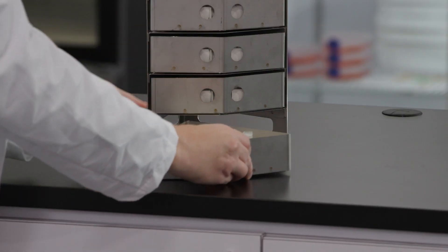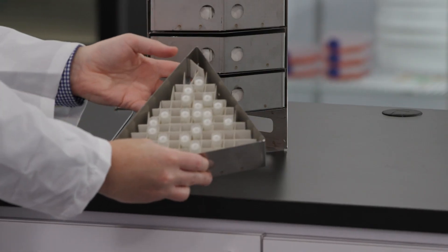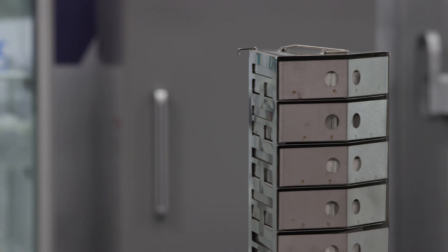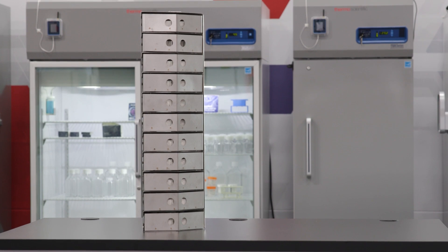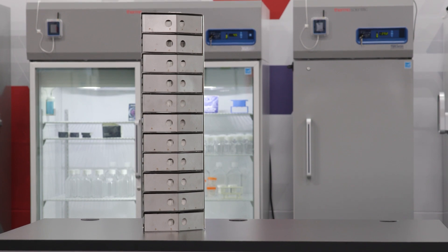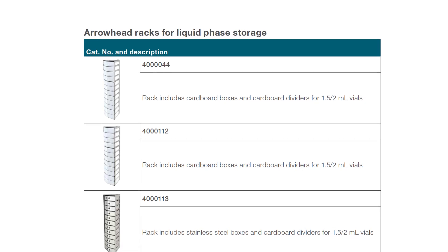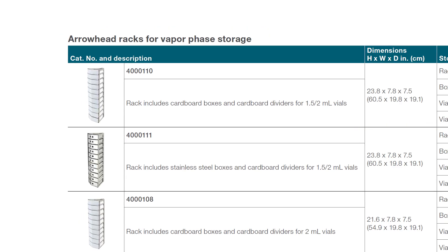The boxes for these racks are shaped like the racks themselves so they can hold 81 vials per box. The system prioritizes efficient use of space and maximizes the number of vials that can be stored in the unit. Like the other racks, the arrowhead racks are available in liquid phase or vapor phase options.